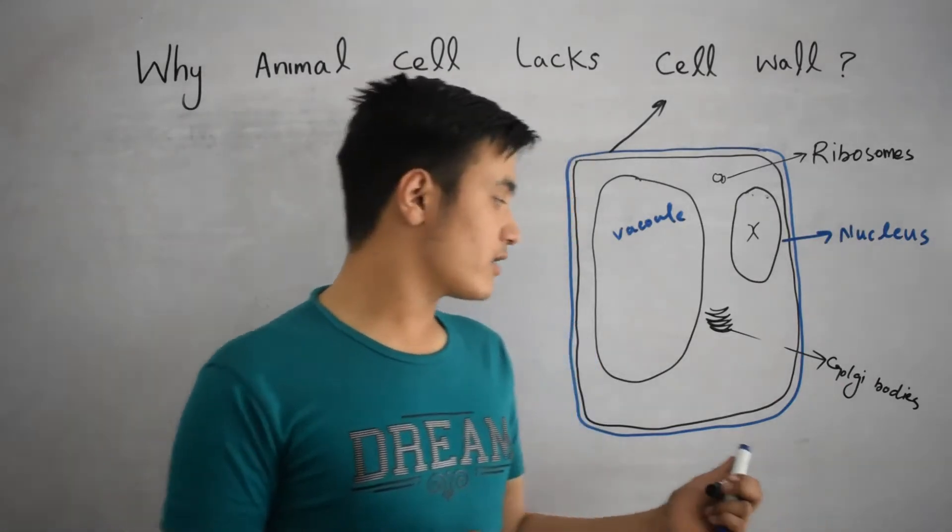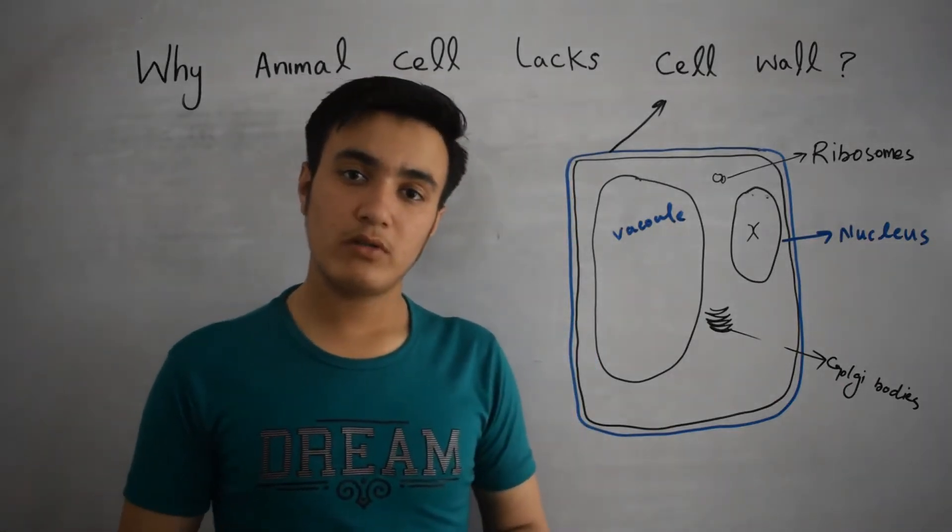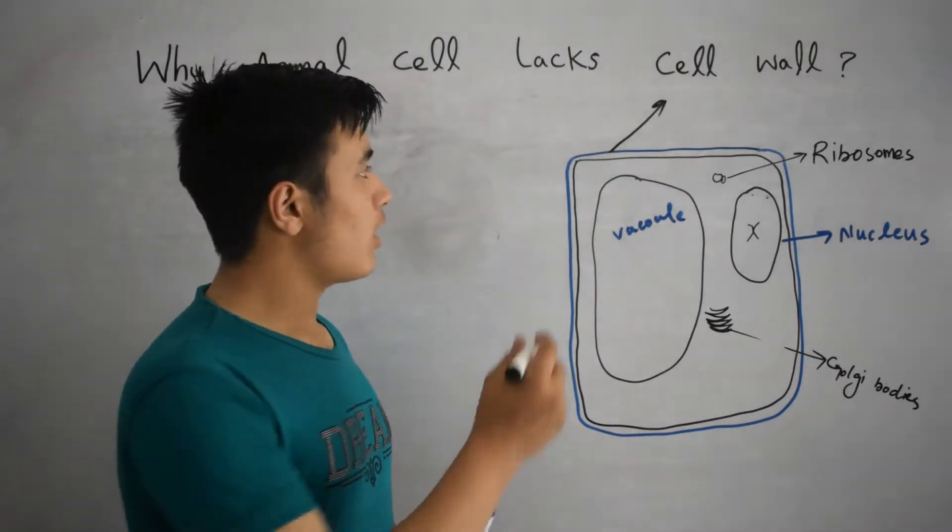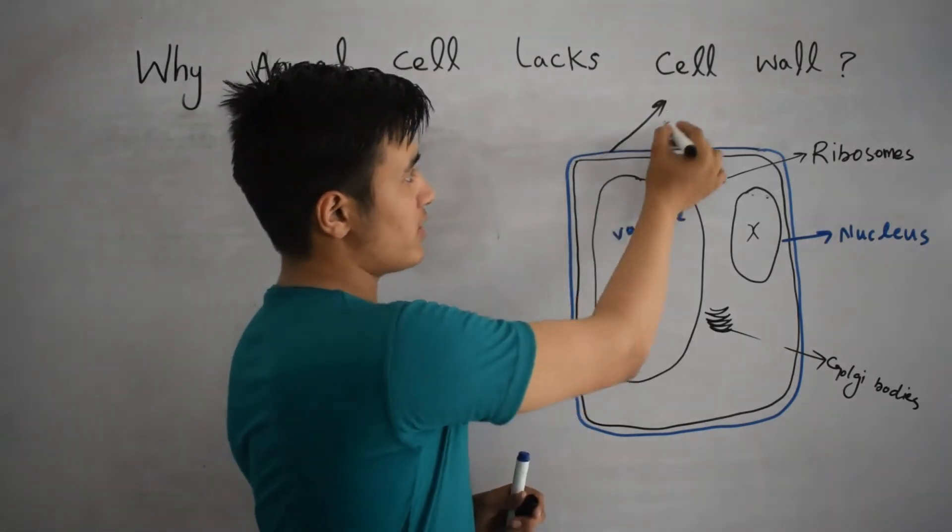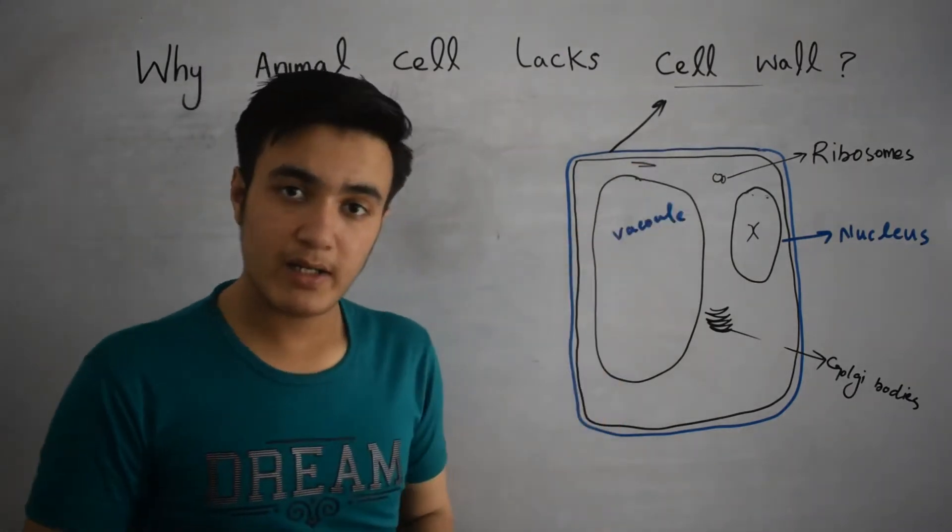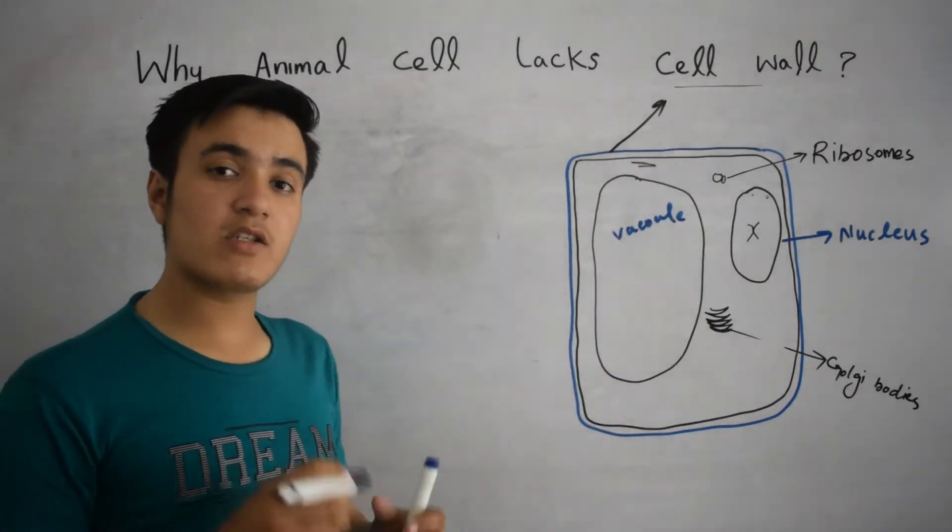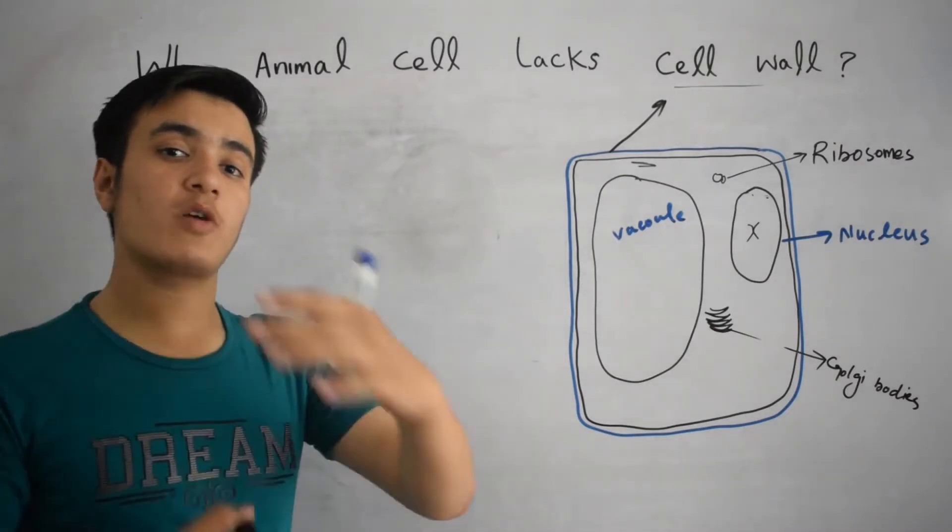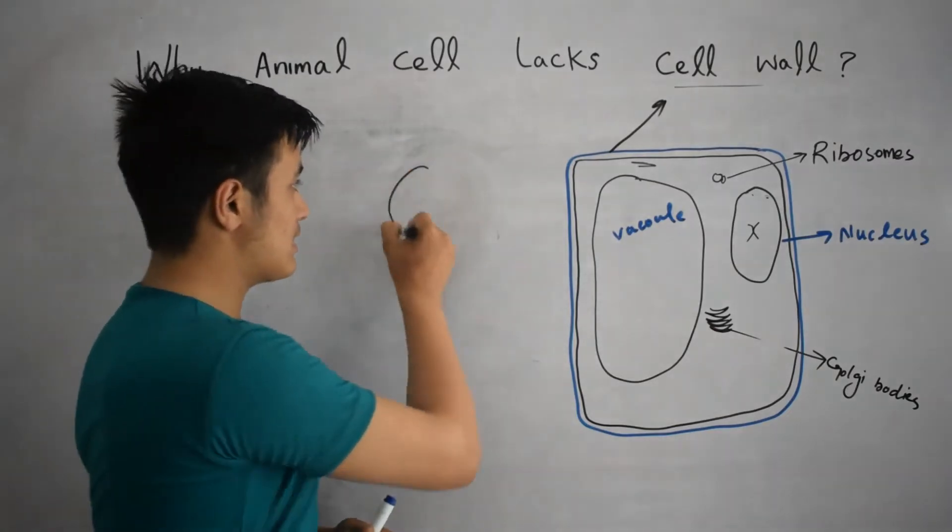Here you can see this is the diagram of the plant cell. Here the cell wall is present, this blue line represents the cell wall and the inner membrane is cell membrane. While in animal cell, the outer membrane is known as cell membrane.